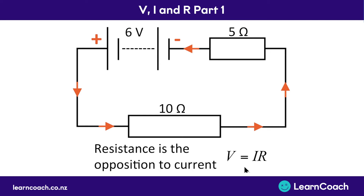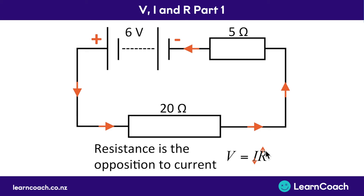The key formula you need to know — and this is absolutely crucial for the whole topic, probably the most used formula — is V = IR: voltage equals current times resistance. For example, if we change this 10 ohm resistor to 20 ohms, the resistance in this formula has gone up. Therefore, because we've got the same voltage of 6 volts, the current would have had to decrease. That makes sense because more resistance means more opposition, so the current slows down. And this isn't just a formulaic thing — in real life the current actually decreases because of that opposition.